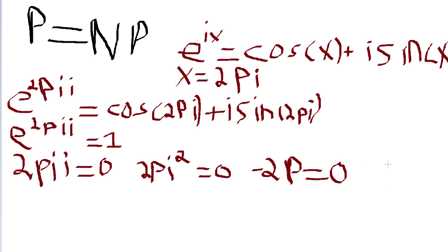Divide both sides by negative 2, and you have pi is equal to 0.